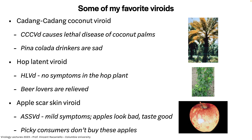Some of my favorite viroids: Cadang-cadang coconut viroid causes a lethal disease of coconut plants — the coconut tree turns all yellow because of this viroid. Hop latent viroid infects the hop plant used to make beer, but has no symptoms, so you can make beer with no problem. The apple scar skin viroid makes apples look scarred — they taste fine, but nobody's going to buy them in the supermarket. After this class, you know you could eat it because the viroid won't reproduce in you. Viroids are named after what they do in the plant.